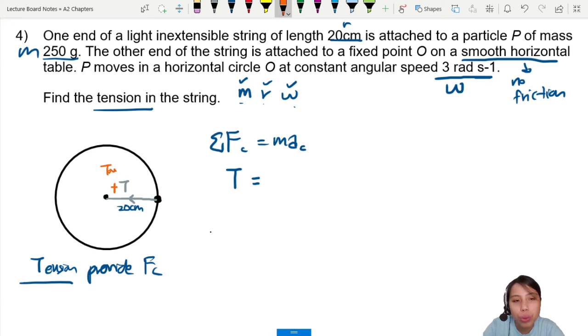So I'm going to define towards the circle as positive. Towards circle, only got one force, positive. If there's another force pointing away, then you must minus. But don't have, right? So this one, T equals m times a. So mass, acceleration is going to be v² over r. Except we want to use the other one, r omega². Must memorize the equation for acceleration. So T equals m r omega².